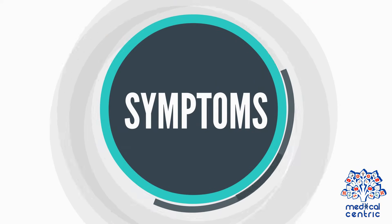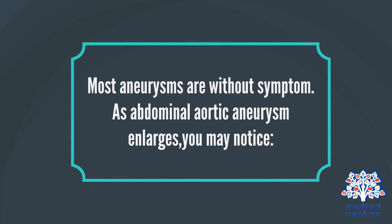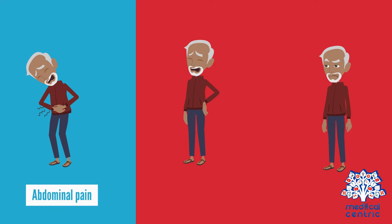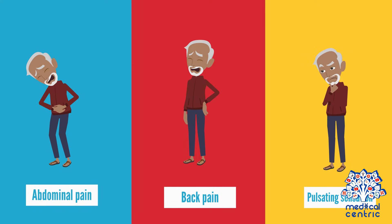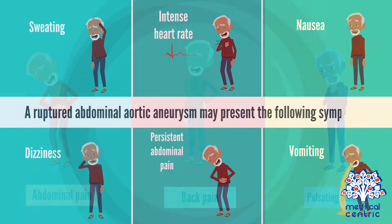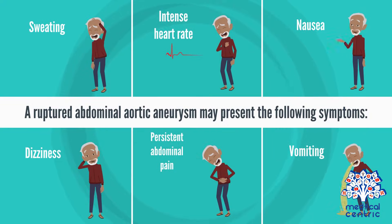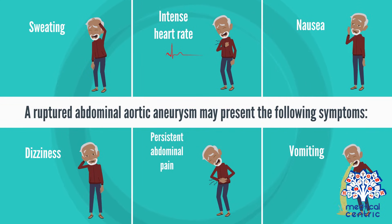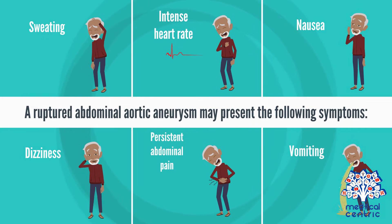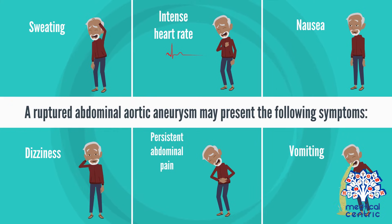Symptoms. Most aneurysms are without symptoms. As abdominal aortic aneurysm enlarges, you may notice constant abdominal pain, back pain, and a pulsating sensation in the navel. A ruptured abdominal aortic aneurysm may present the following symptoms: sweating, intense heart rate, nausea, dizziness, and sudden onset of severe, persistent abdominal or back pain.